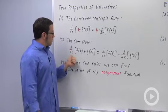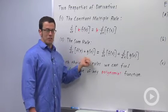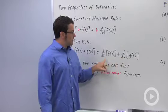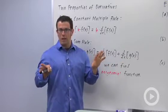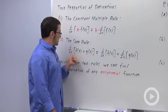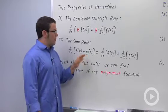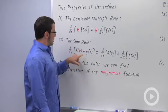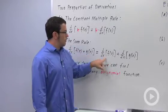The sum rule: the derivative of the sum of two functions, f and g, is equal to the sum of the two derivatives. So you can separate the sum. This is almost like distributing the derivative over a sum, but don't think of it that way. It's just the derivative of a sum is the sum of derivatives.